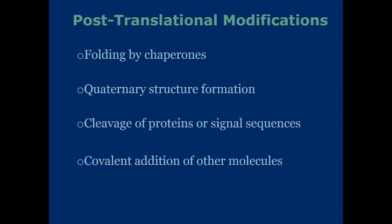After translation occurs, there are different modifications that happen to the newly formed protein. For starters, it has to be folded, and sometimes it's going to be assisted by chaperone proteins to get into the proper configuration. Also, quaternary structures can form as well — a quaternary structure is when multiple proteins combine together to form a more complex structure. These proteins can also be cleaved or have signal sequences added to them, and lastly there's covalent addition to other molecules before the protein is considered complete.